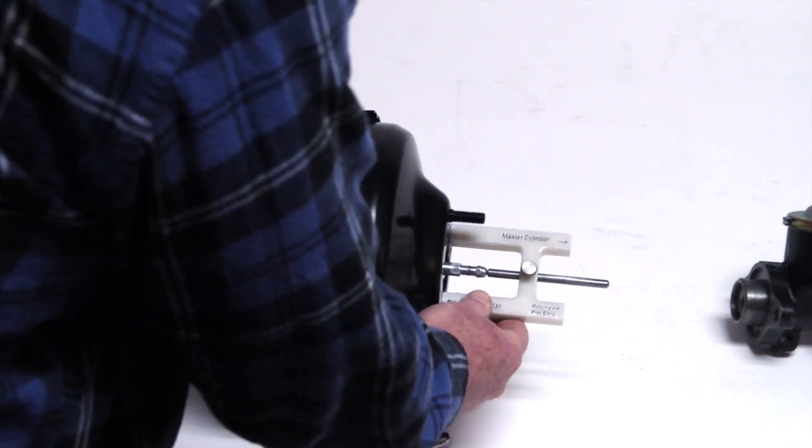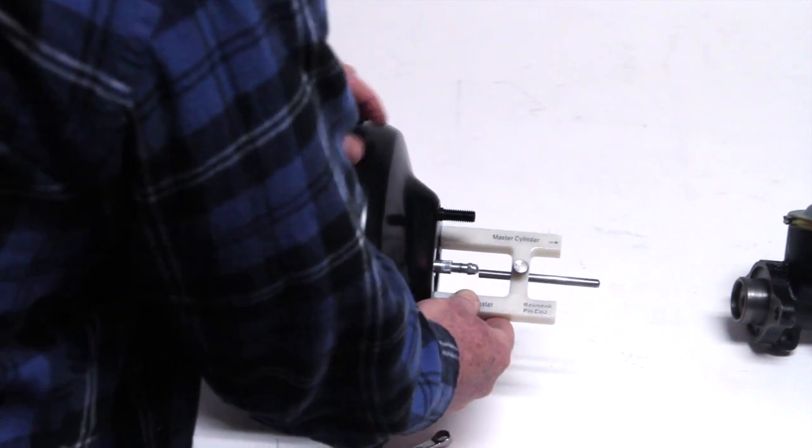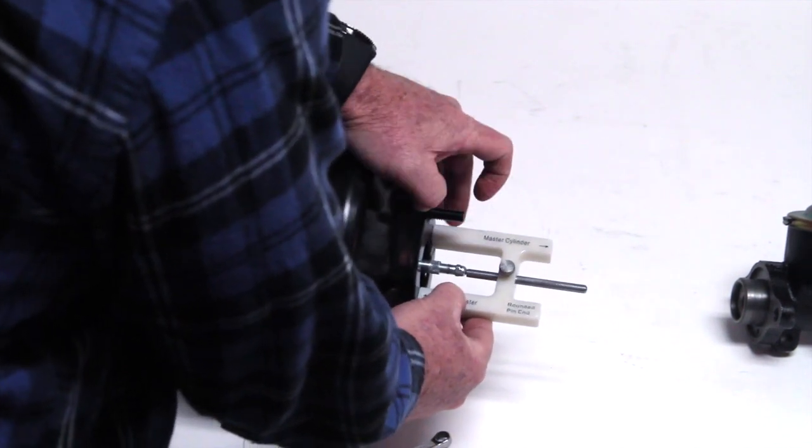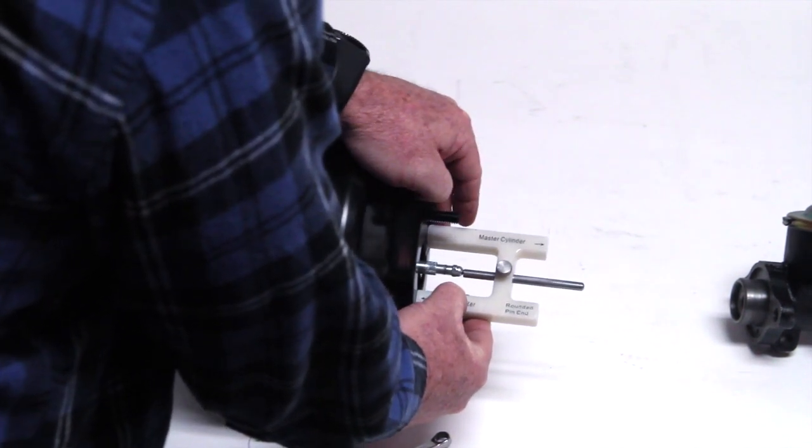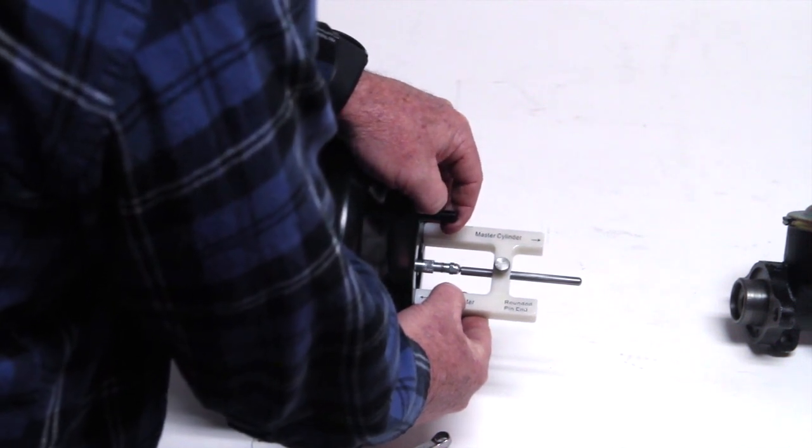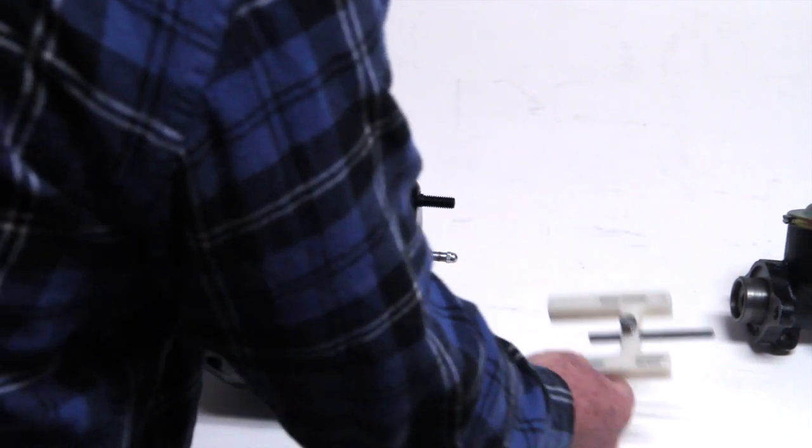And there you are, it's as simple as that. You're bringing the rod out to touch the tool, and once the tool sits flat on the booster and it touches the rod in the tool, your measurement and the adjustment is done and now the master cylinder is ready to bolt to the brake booster.